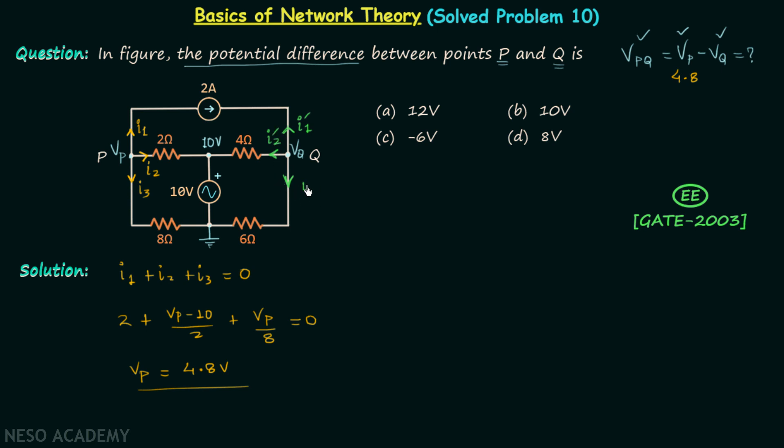And this current is equal to I3 prime. According to KCL, I1 prime plus I2 prime plus I3 prime will be 0. I1 prime when you look at in the network you will find it is equal to minus 2 amperes.